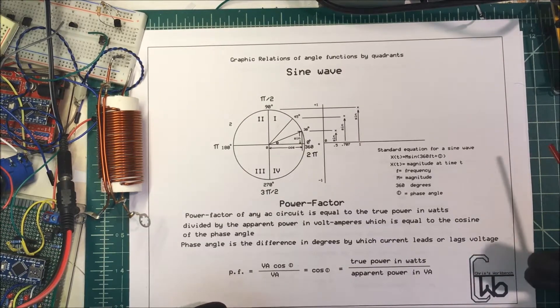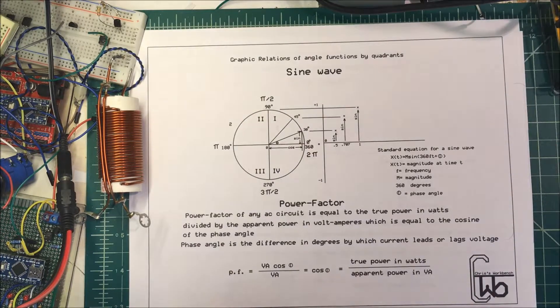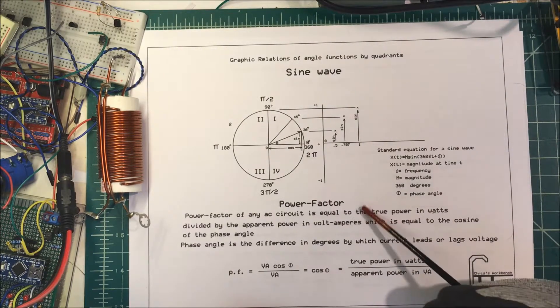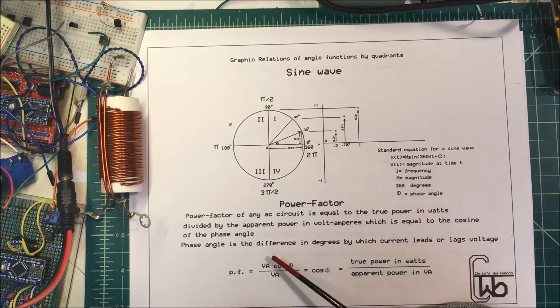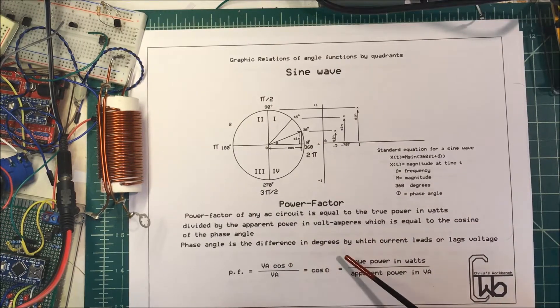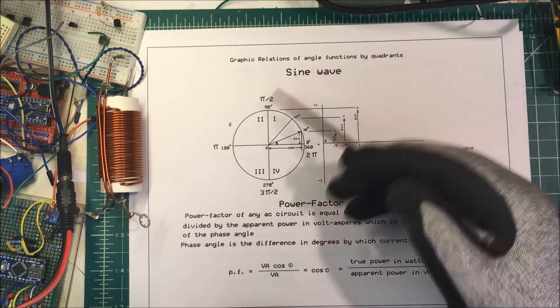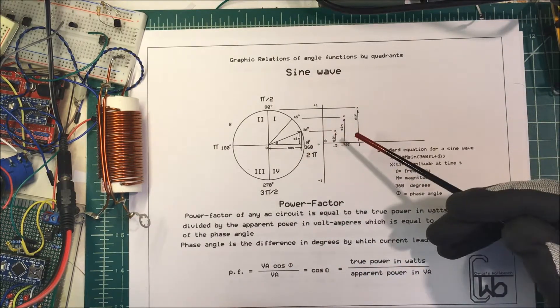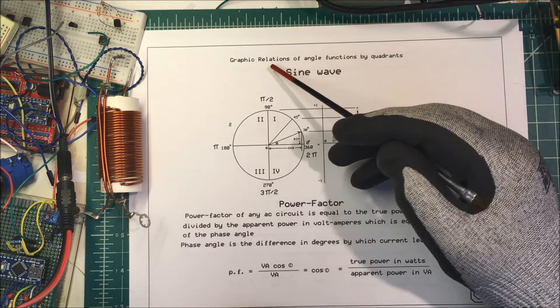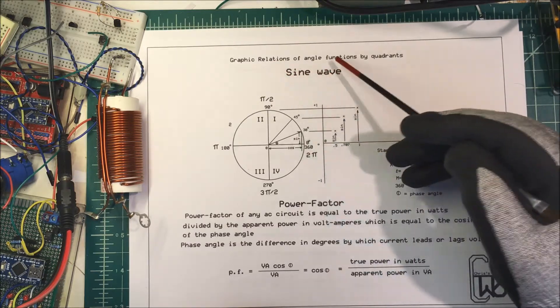We're going to draw a voltage and a current sine wave in Excel, then calculate the power factor and the phase angle between the two. Let's look at some terms first.